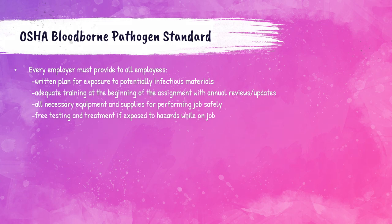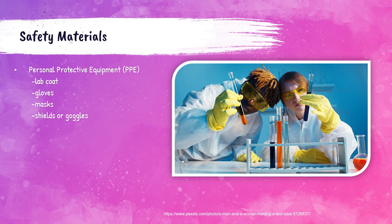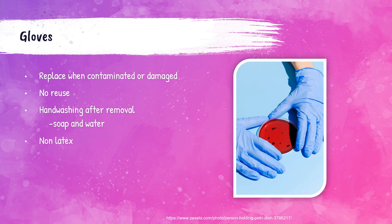Personal protective equipment, or PPE, in the lab includes a lab coat, gloves, mask, shields, and goggles. Proper glove use includes replacing gloves when they become contaminated or damaged. Gloves cannot be reused — once they get dirty, you must take them off and replace them. Every single time you remove a pair of gloves, you must wash your hands with soap and water.